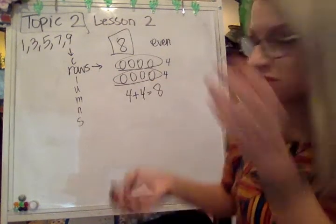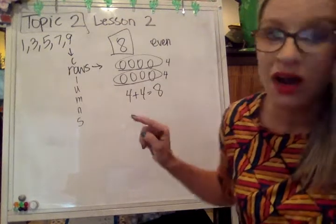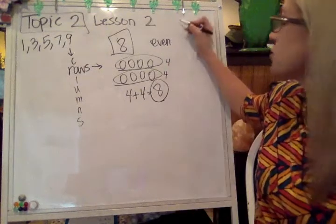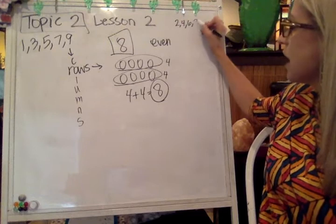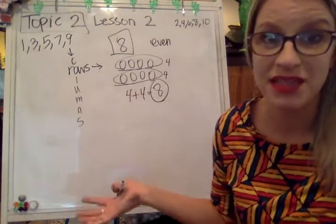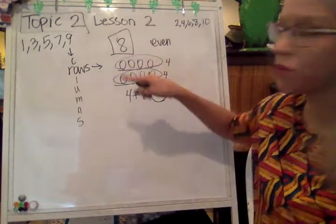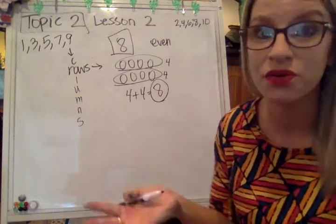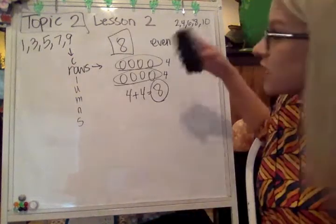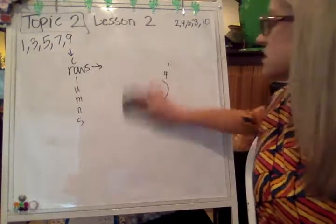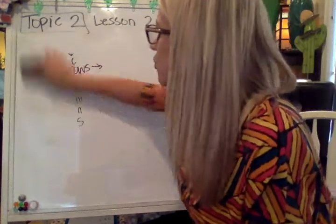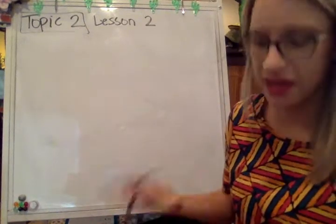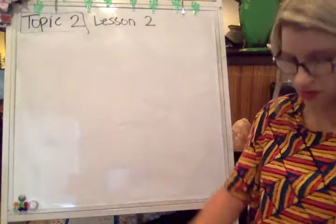And you're right, it is a doubles fact. Our doubles facts all have sums that are even. Even numbers are numbers that you can skip count by twos and you will get to that number — two, four, six, eight — eight is even. For this, you're going to have to make a model to prove that things are either even or odd. You'll be given some different numbers and have to decide by making a model if it is even or if it is an odd number.